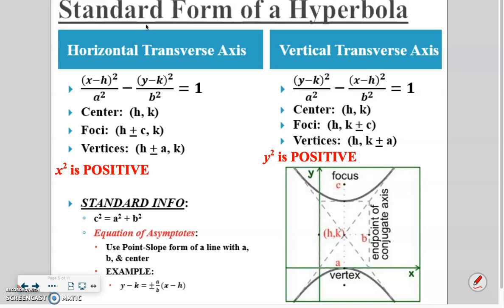This is our equation, once again, for the horizontal, because the x squared term is positive or coming first. Over here, the y squared term is coming first, or that's the positive aspect, so that's going to be our vertical.